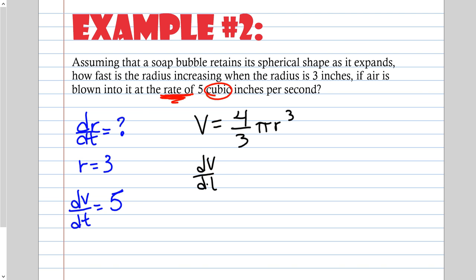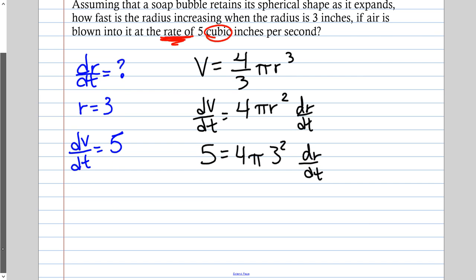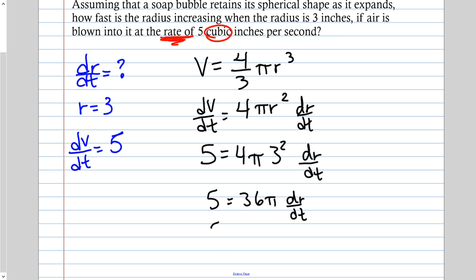Derive: dV/dt equals 4πr² dr/dt, because the 3 times 4 gives 12, and 12 divided by 3 is 4. We are deriving with respect to time, and since radius is not time, we implicitly derive. Plug in: 5 equals 4 times π times 3 squared times dr/dt. Simplify: 3 squared is 9, times 4 is 36. We're solving for dr/dt, so divide both sides by 36π.